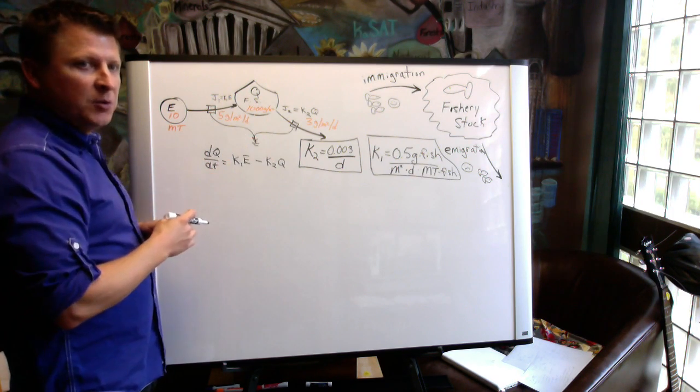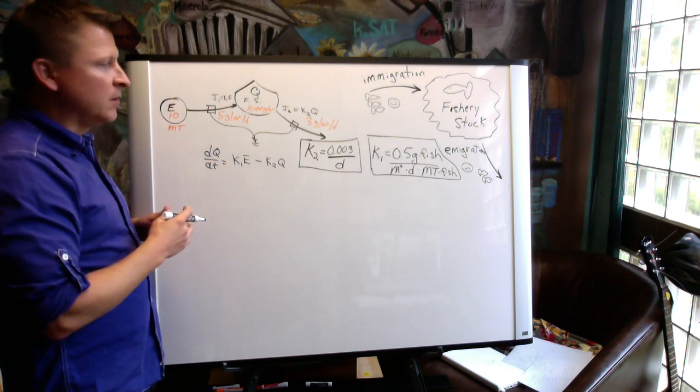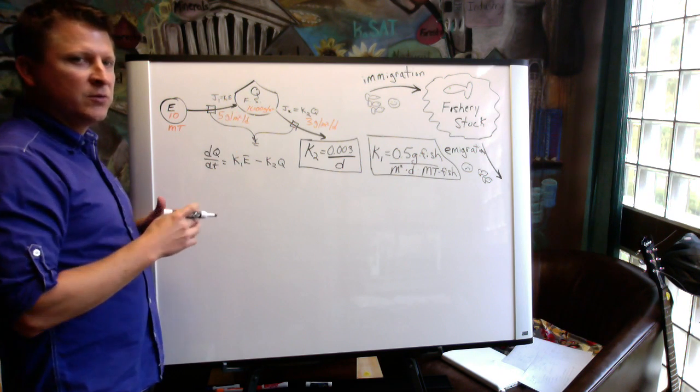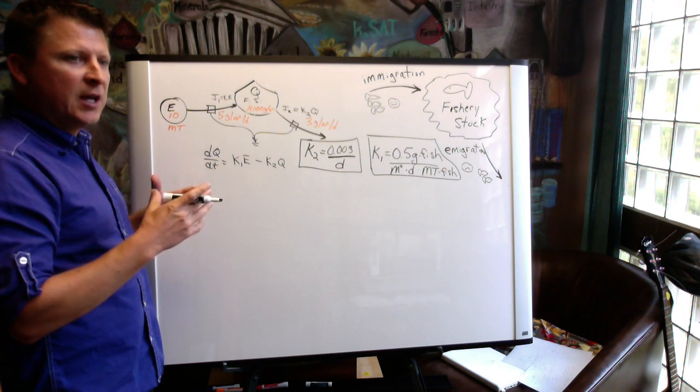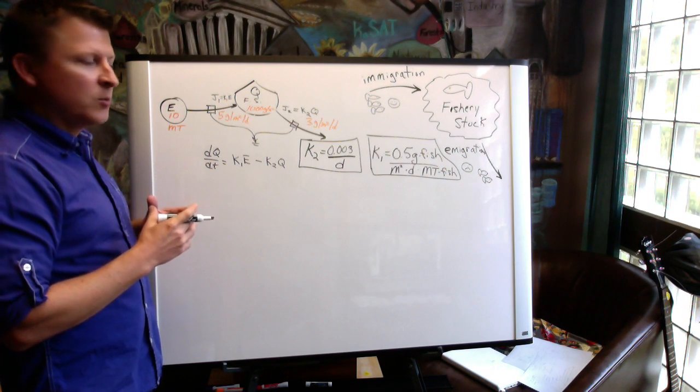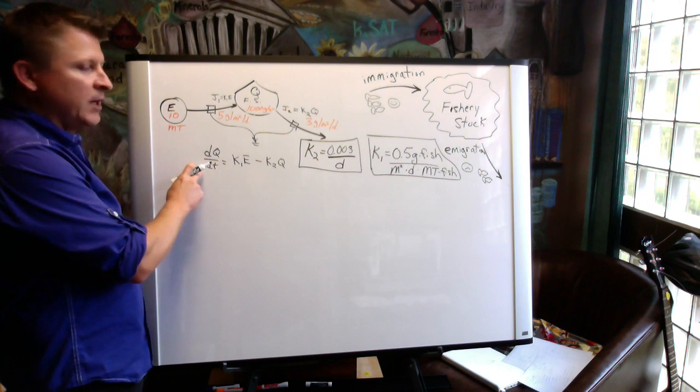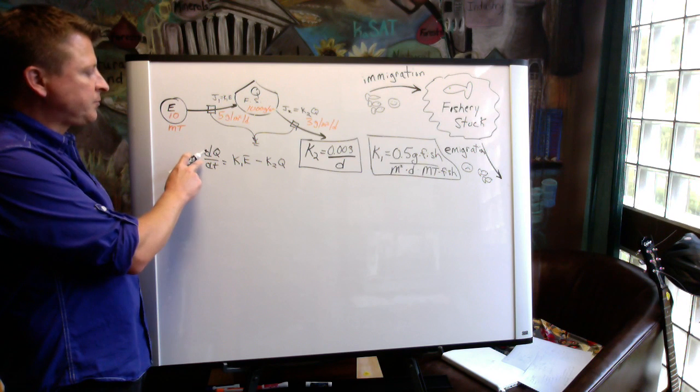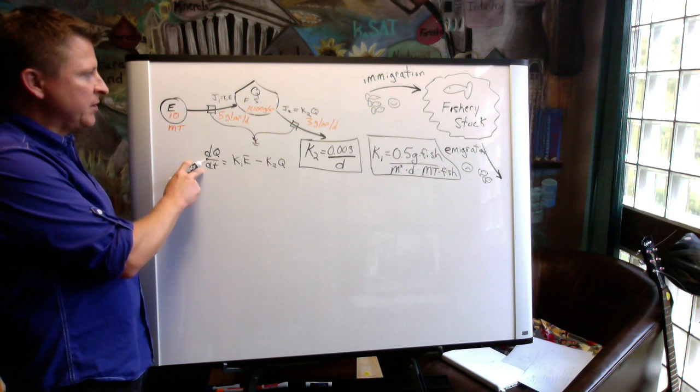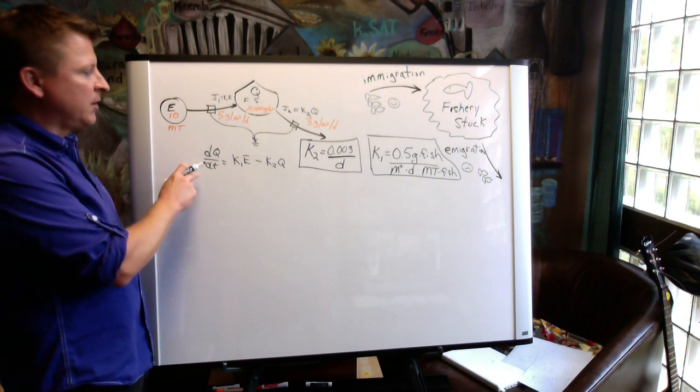Same with the outflow. They have the same units. Whereas Q has the units of just material or mass per area. There is no time associated with Q. But once we take the derivative of Q, we can see that it's the change in Q per change in time. So it will have units of flow.